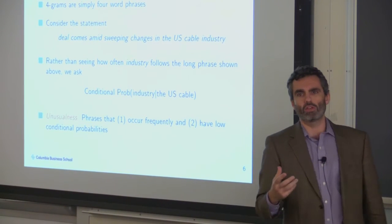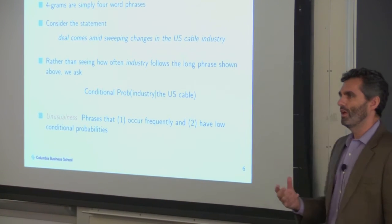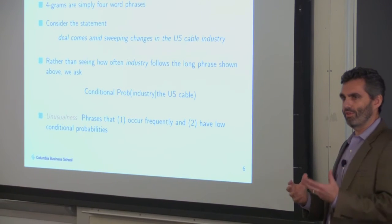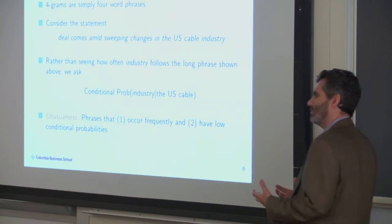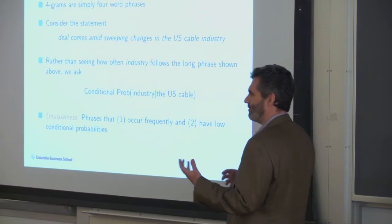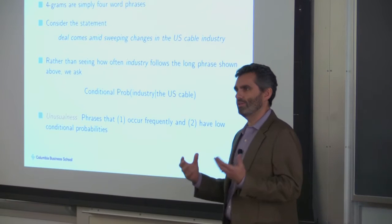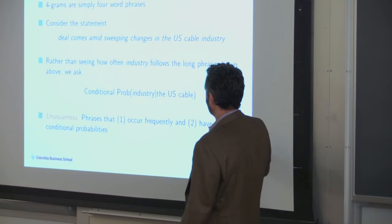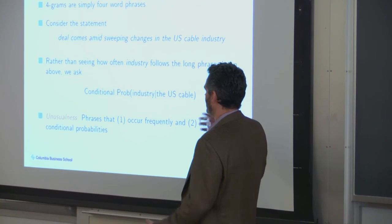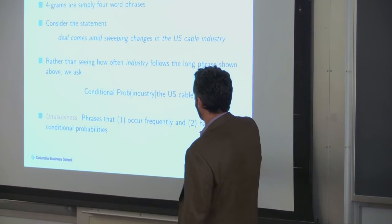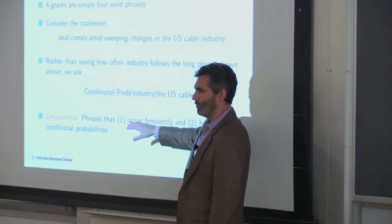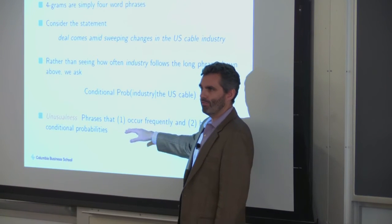You go into a training set — say two years of data, thousands of articles — and count every time you've seen 'the US cable.' Say that's happened a hundred times, and 'the US cable industry' 50 times, meaning a 50% probability of seeing 'industry' following 'the US cable.' If you then saw 'the US cable rhinoceros,' your model would assign that a probability of zero, since 'rhinoceros' has never been seen following 'the US cable.' This captures the idea that when people describe important events, they use language they've never used before — combinations of words that haven't been next to each other because they haven't seen quite these kinds of events.